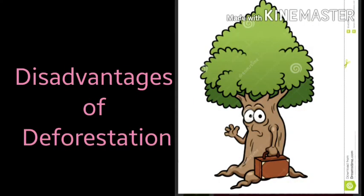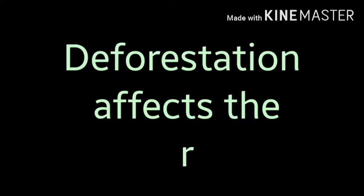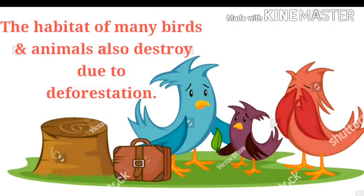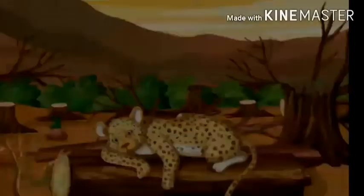Disadvantages of deforestation: Deforestation affects the rain. Due to deforestation, the percentage of carbon dioxide increases in the atmosphere. The habitat of birds and animals is also destroyed due to deforestation.